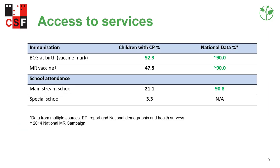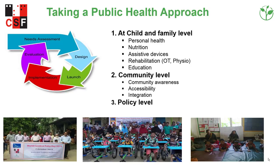A photograph of a child with spastic CP and epilepsy. A table shows CP children's coverage rate: EPI/MR vaccine coverage is 47.5% when the national rate is 90%, and school attendance rate is only 21% when the national rate is 91%.